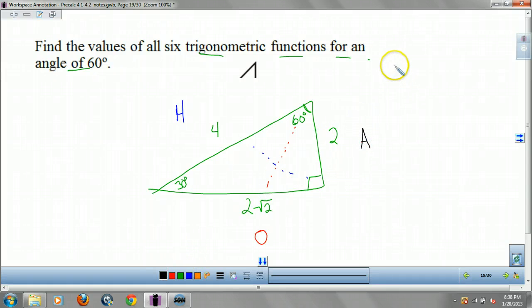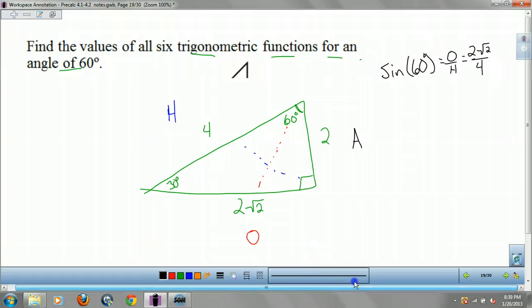So let's find these trig functions. So sine of 60. Well, sine is opposite over hypotenuse. Our opposite is 2 root 2. Hypotenuse is 4. So if I were to rewrite this... No one fixed it. That's supposed to be 2 root 3, guys. My bad. I'll fix it right now.